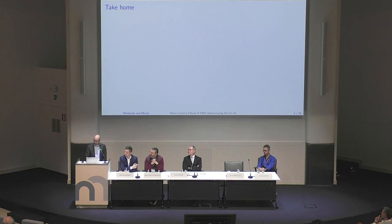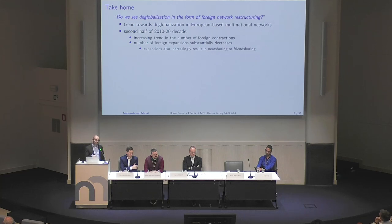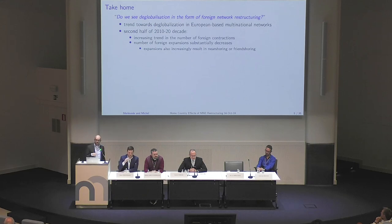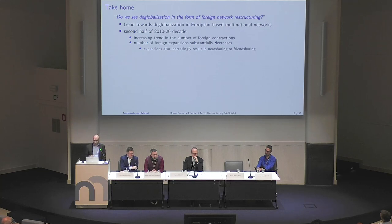Time is short, so I'll give you the take-home upfront. For the first question — do we see deglobalization in the form of foreign network restructuring? — the answer is yes. We see a trend towards deglobalization in European-based multinational networks, especially in the second half of the decade. We see an increasing trend of foreign contractions, so the number of foreign affiliates is being reduced. We also see less foreign expansion, and those expansions we do see increasingly align with the idea of front-shoring and near-shoring.